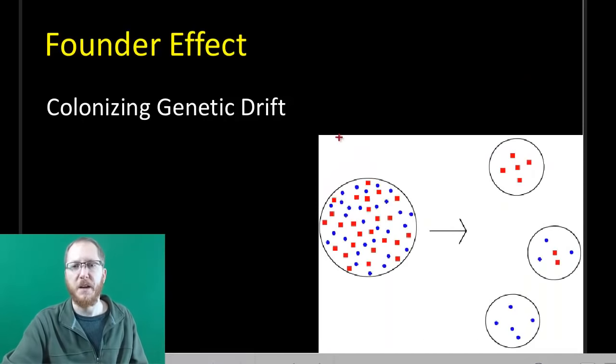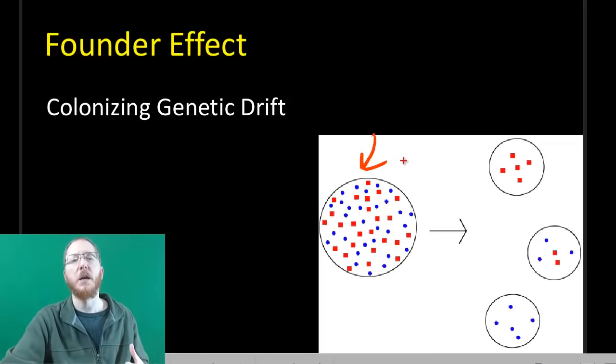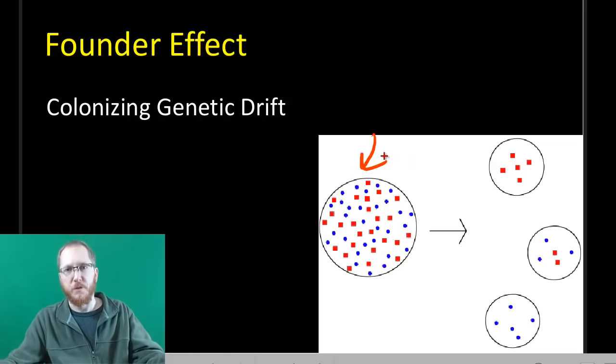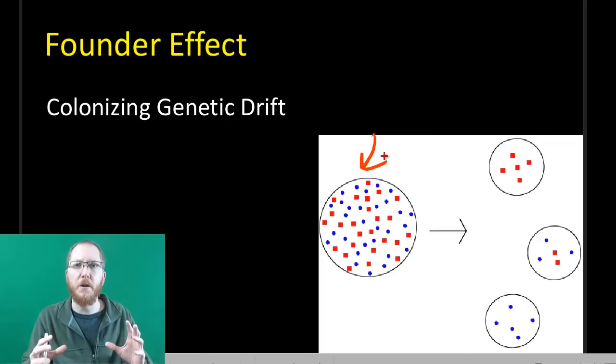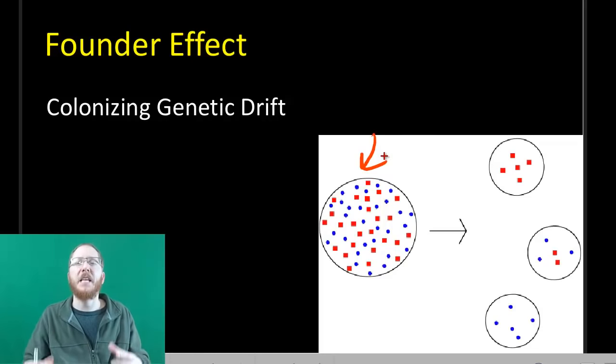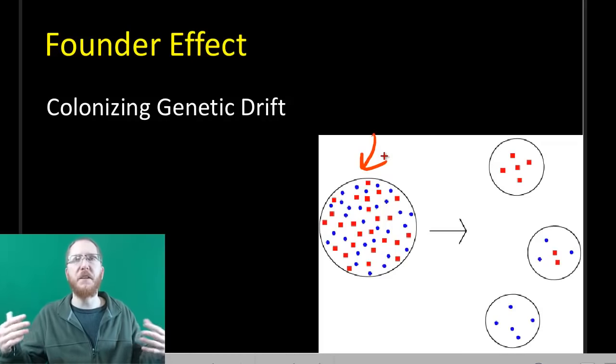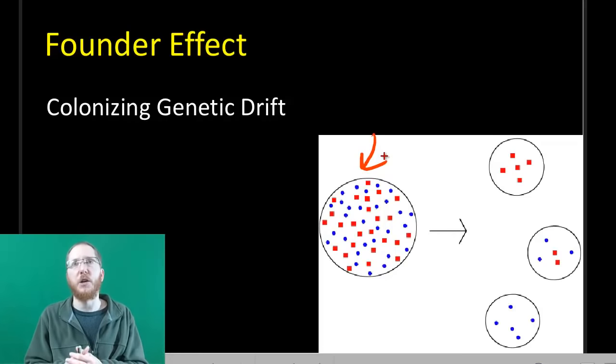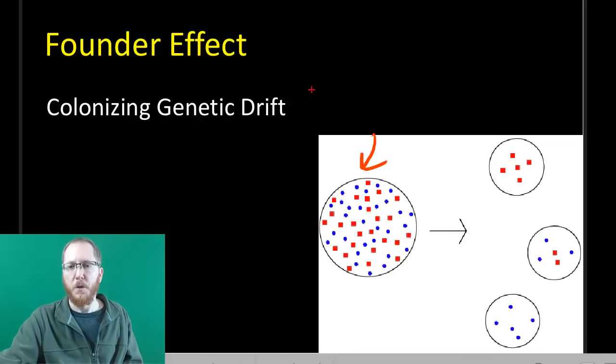The other way is we start out with this nice big population that's happy and genetically healthy, and then it splinters. What I mean is the big population is typically still there, but small populations kind of head out on their own and try to start their own things. This is commonly called the founder effect because a small group of finches might have flown their way to the Galapagos Islands. It could be a queen goes off on her own to start a new hive. Whatever the case may be, we splinter that large population and we create several small ones from it.